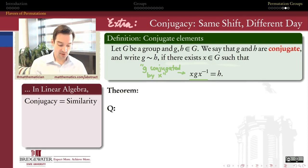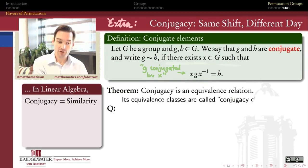And why conjugacy is super useful and flexible is it turns out that conjugacy is an equivalence relation. This relation here, that G is conjugate to H, is symmetric. If G is conjugate to H, then H is conjugate to G. It's reflexive. Every element is conjugate to itself. And it's transitive. If G is conjugate to H and H is conjugate to J, then G is conjugate to J.